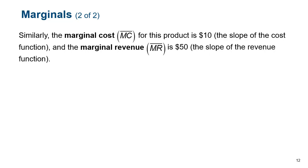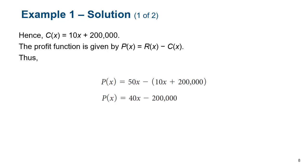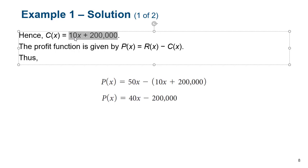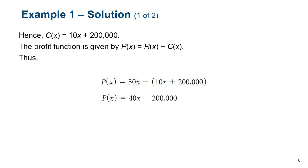Marginal cost is the slope of the cost function, but it's also just our variable cost — because for every new item produced, it costs us $10. Looking at the cost function and graphing it, we know this is slope: y = mx + b. Our slope m is 10, which tells us it costs $10 per unit produced. So marginal cost is $10 — it's going to cost us an extra $10 for everything we make.